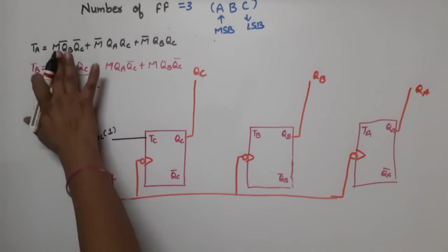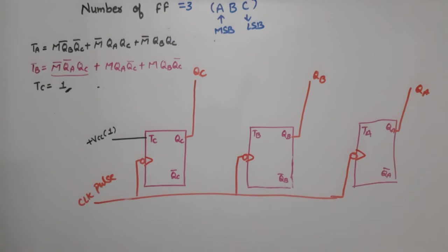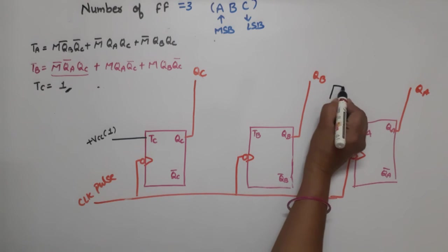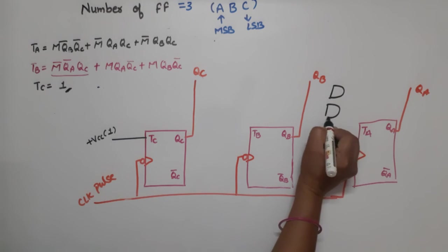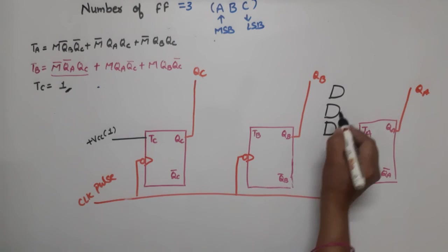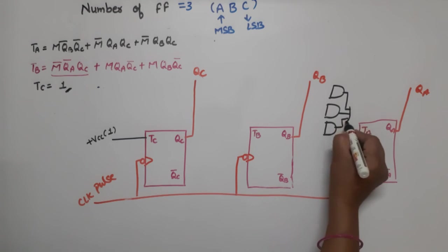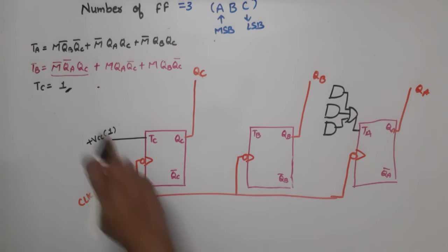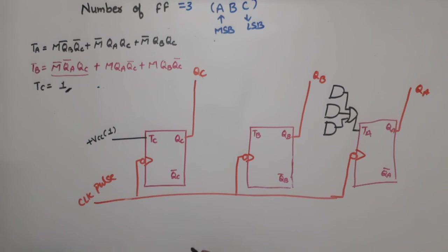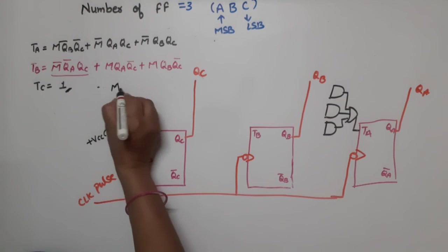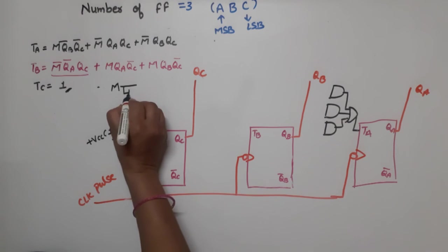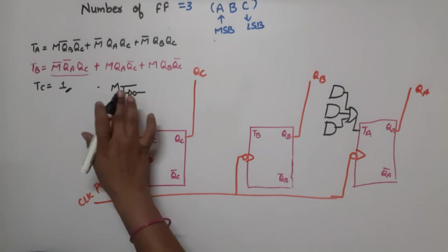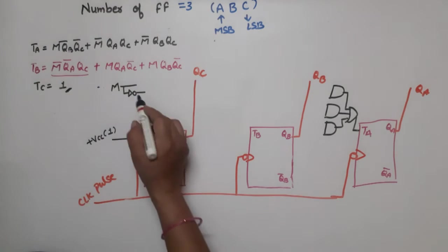TC input is connected to logic 1 (VCC) since TC equals 1. For TA, we need three AND gates with an OR gate combining their outputs to feed the TA input. Mode M is input directly, and M-bar is derived through a NOT gate. When M equals 1, it is down counting; when M equals 0, it is up counting.